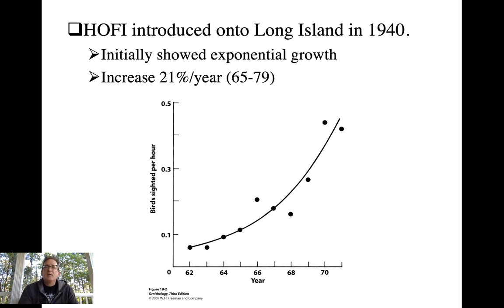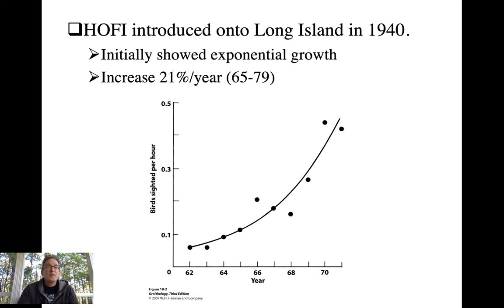Here's another example of how quickly populations can grow in species with a quick life history tactic — house finches. They were normally found in the western U.S. but were introduced into the east on Long Island in 1940. There was a slow growth rate at first, but then every year there was a bigger jump in population numbers. We call that exponential growth — when the rate of growth increases every year. The average over this time period was 21% population increase per year, which is a really fast-growing population.